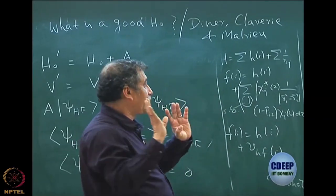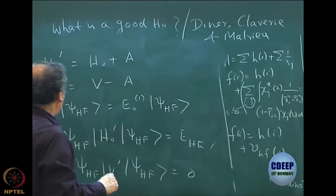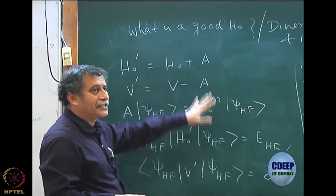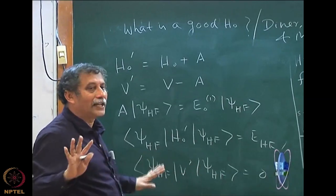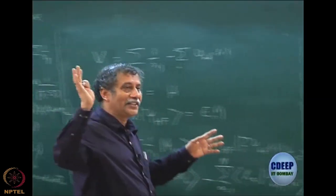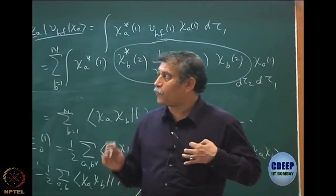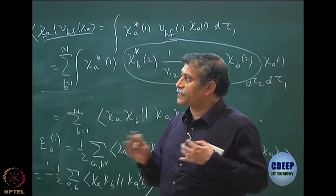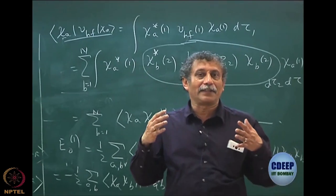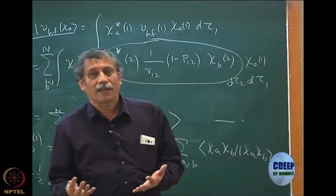There is no problem, but you have to remember that. People have tried lots of tricks like this, but eventually they do not help. Within the Moller-Plesset framework, it is impossible to get away from the fact that you do not get correlation energy at the first order.